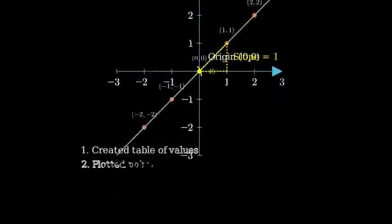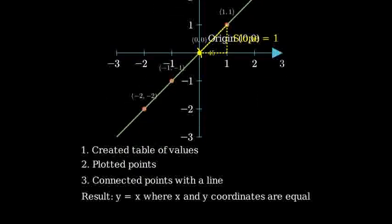To summarize, we've graphed y equals x by creating a table of values, plotting the points, and connecting them with a straight line. This line represents all points where the x and y coordinates are equal. See you next time.